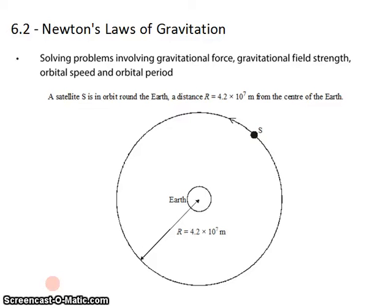All right, David Kahn here with another Question Bank question in topic 6.2, Newton's Laws of Gravitation. In this question, we're dealing with a satellite which is in a circular orbit around the Earth, and the radius of the circular orbit is 4.2 times 10 to the 7th meters.